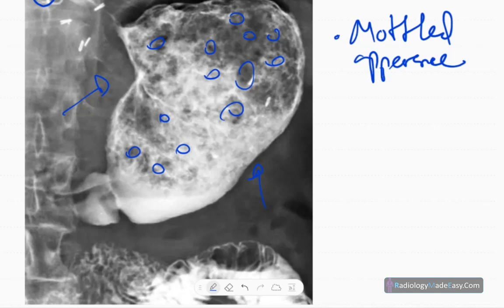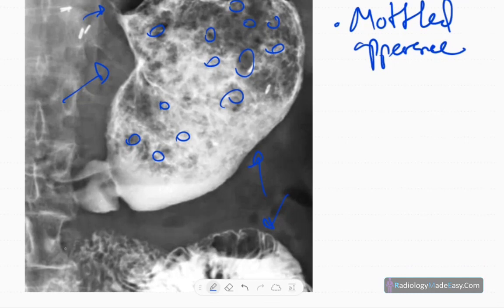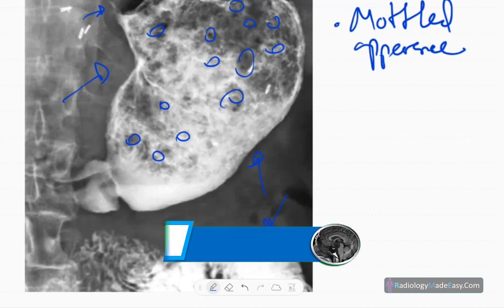However, the gastroesophageal junction is at the normal position and DJ flexure is at the normal position. You can see the passage of contrast to the duodenum and the upper jejunum, so there's no obstruction or obstructive lesions in this one.